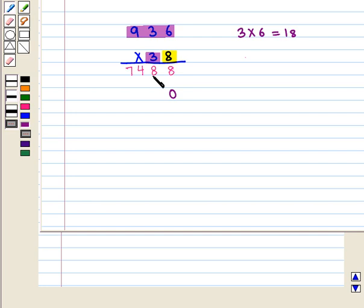So we write 8 below the tens place of the above number and place 1 above the tens place. Now 3 times 3 is 9 plus 1, which equals 10.